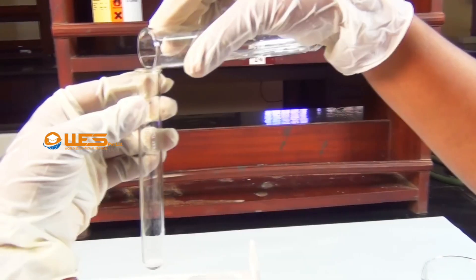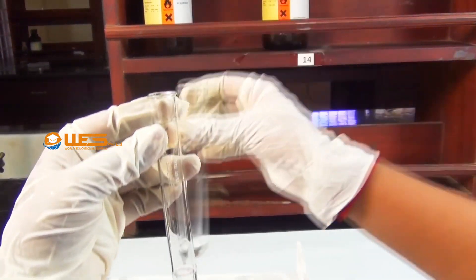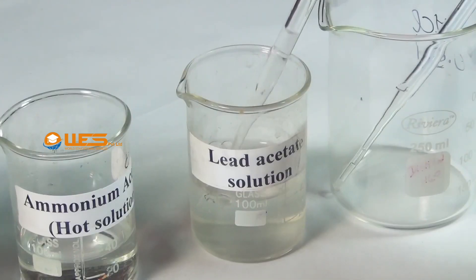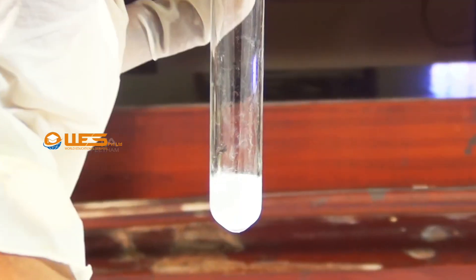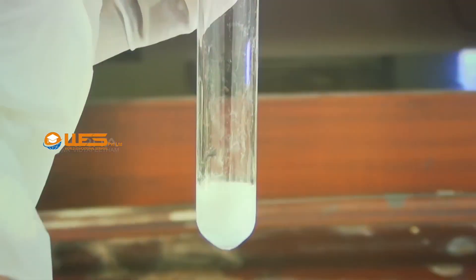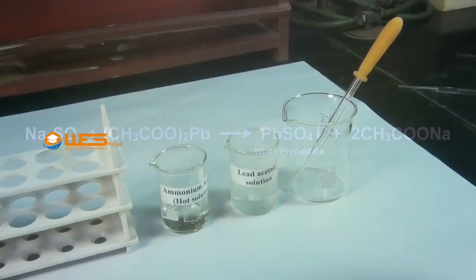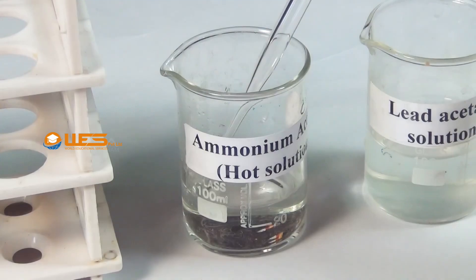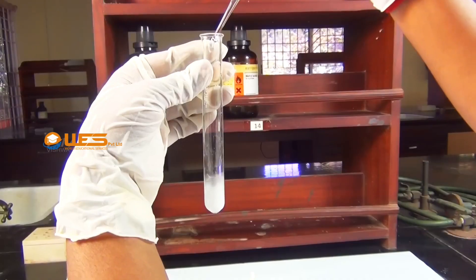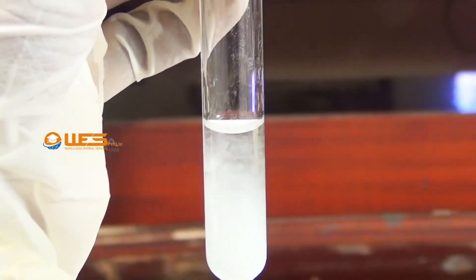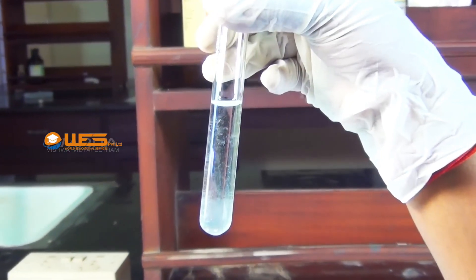Procedure: Take a small portion of aqueous solution of the salt in the test tube. Add lead acetate solution using a dropper. Sulphate reacts with lead acetate to form a white precipitate of lead sulphate. Add excess of hot ammonium acetate solution to the lead sulphate precipitate. The precipitate is soluble in excess of hot ammonium acetate.